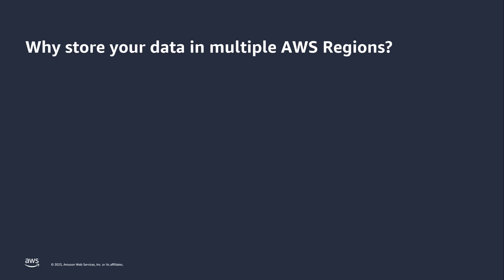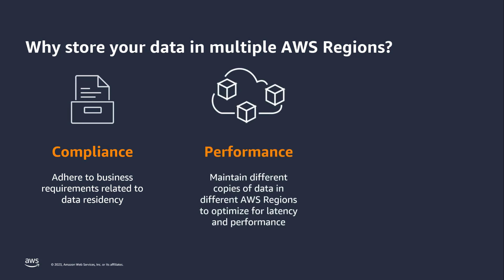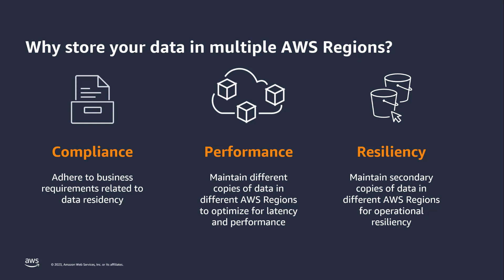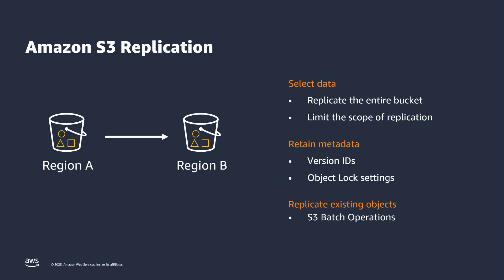So why would you consider storing your data in multiple AWS regions? You may have a compliance requirement to store a secondary copy of your data hundreds of miles away from the source. You can also increase performance and minimize latency for customers or end users that are distributed across geographic locations by maintaining multiple object copies in AWS regions closer to those users. For the sake of our data protection conversation, let's focus on operational resiliency. S3 Replication can be used to store an additional copy of your data in a separate AWS region to allow continued data access in the unlikely event of a regional disruption. S3 Replication allows you to replicate an entire bucket or a subset based on prefix or object tags. The object metadata is retained, including version ID and Object Lock retention settings. When you enable replication, it will only apply to new objects added to your bucket. However, you can use S3 Batch Operations to replicate any existing objects that were added to the bucket prior to the replication rules being configured.